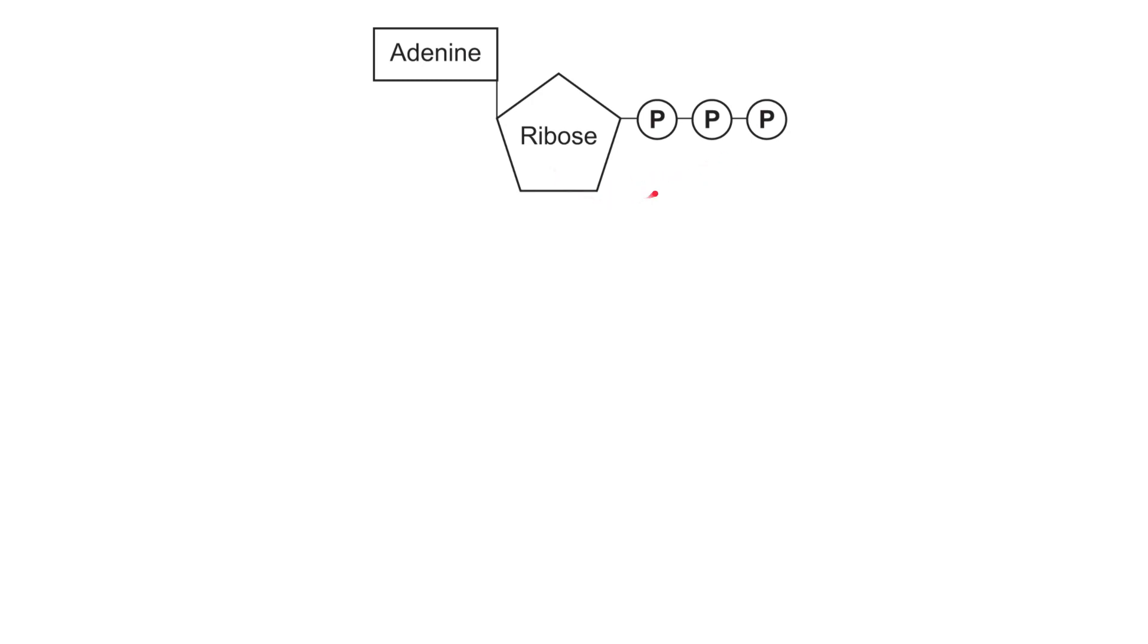So here is the structure of ATP, and you should be familiar with some of this if you're familiar with the structure of RNA nucleotides. So we have the ribose sugar, we have an attached adenine base, and then over here we have three attached phosphate groups.